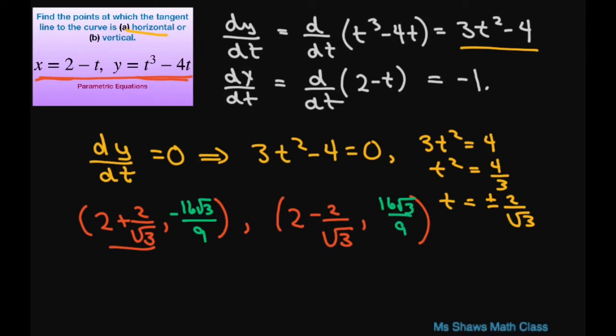If you use the calculator, this would be 0.845, negative 3.079. And this one would be 3.155 comma 3.079.